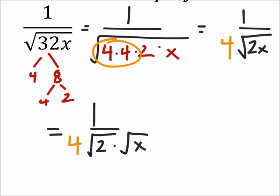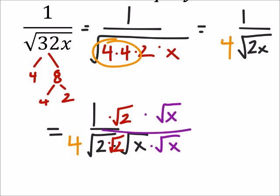If I multiplied the square root of 2 times the square root of 2, then I just need to multiply the numerator by the same value, square root of 2. And the x I can multiply by the square root of x, which means I need to multiply it in the numerator as well. The reason I want to do that is because this is a square root and I need pairs - I need a pair of twos and I need a pair of x's.